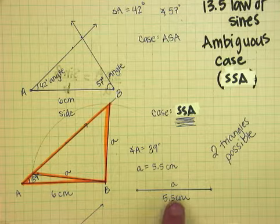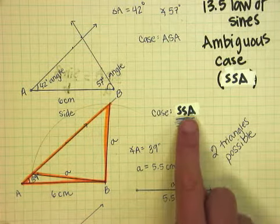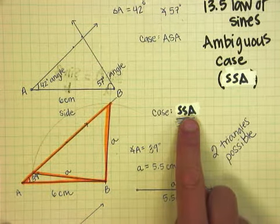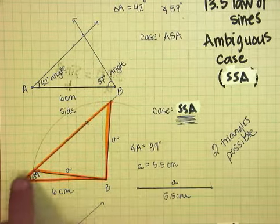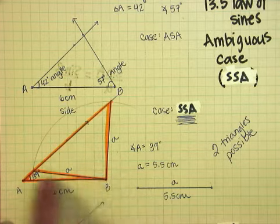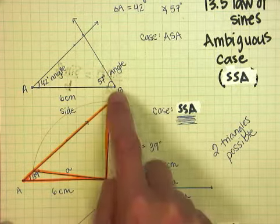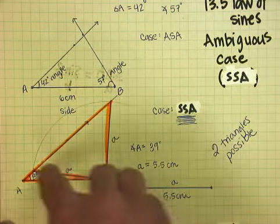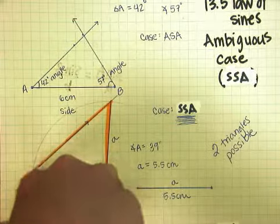So basically what we have is a side, a side, and an angle, hence the case being side-side-angle. Now when we drew this, we started by drawing 6 centimeters, then we drew the angle, and then we took a compass and we drew the arc to figure out where the triangle would be.